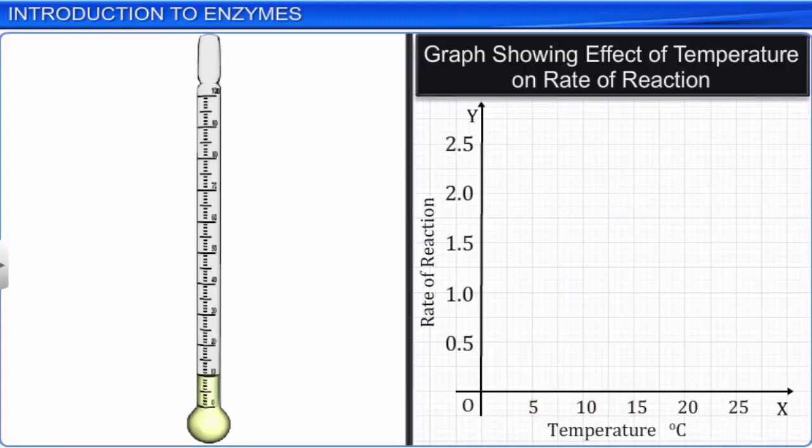This rate generally doubles or decreases by half for every 10 degree change in temperature in either direction. For example, consider that a particular reaction is taking place at 5 degrees with the rate of reaction as 1 unit. When the temperature is increased by 10 degrees, the reaction rate will double to 2 units. Similarly, if the temperature is decreased by 10 degrees, the reaction rate will become half.